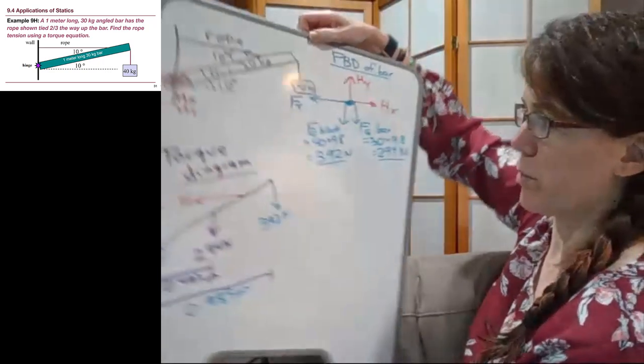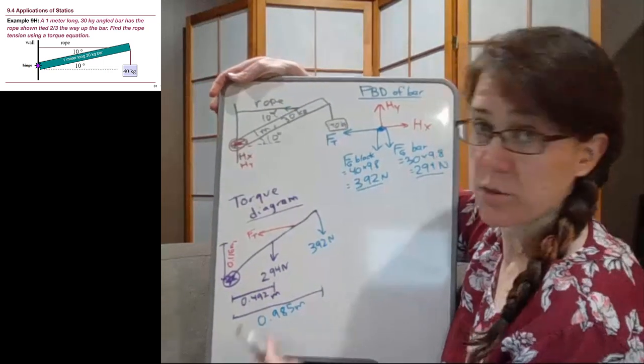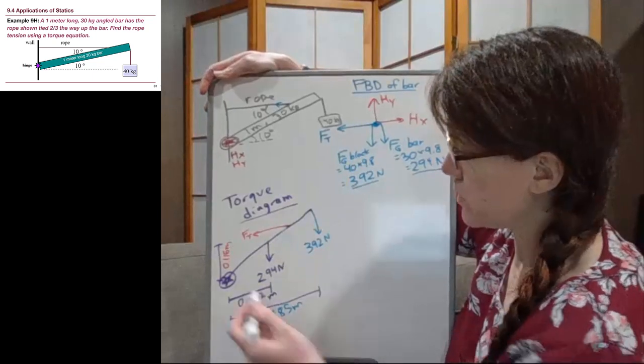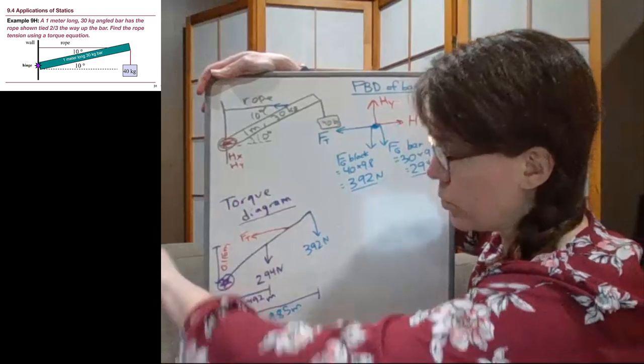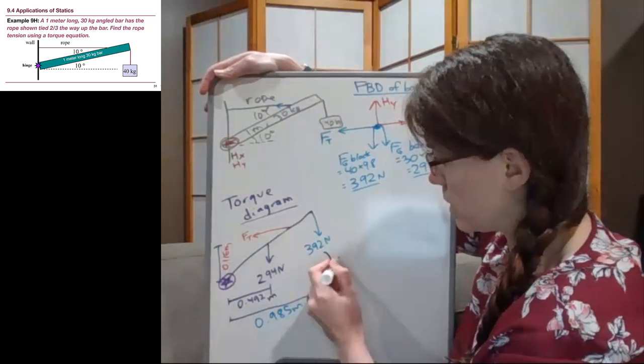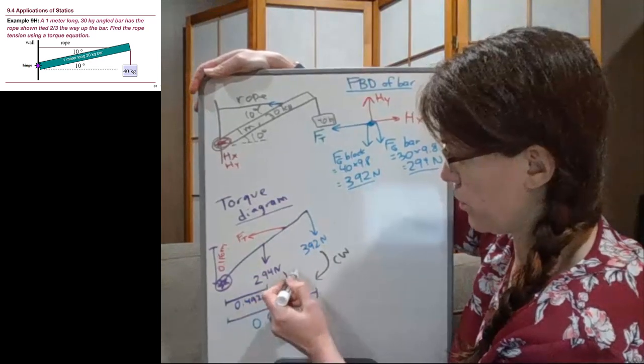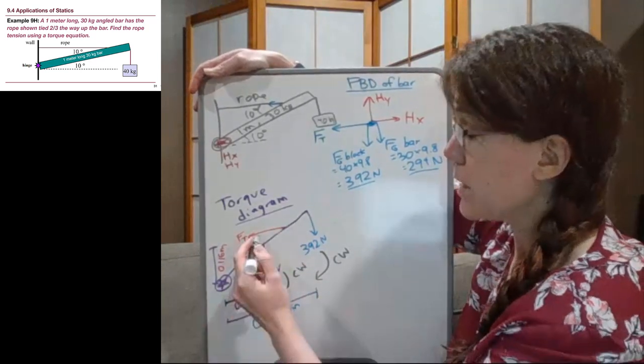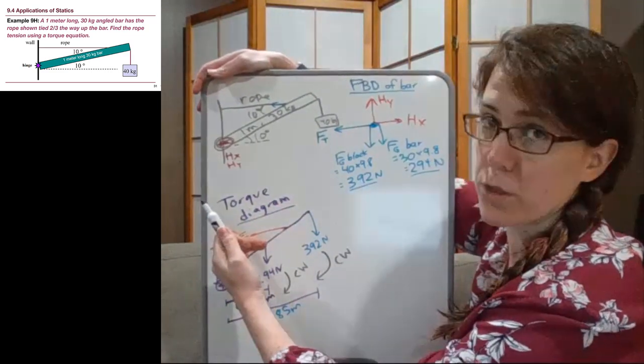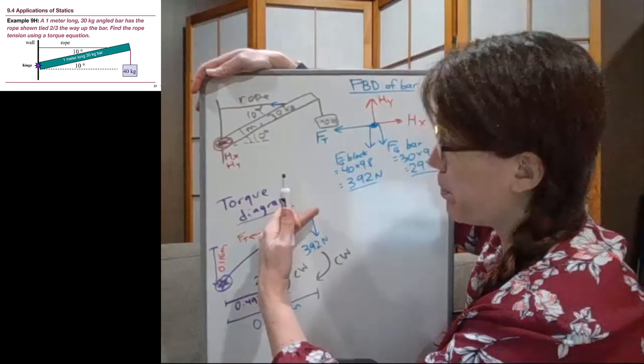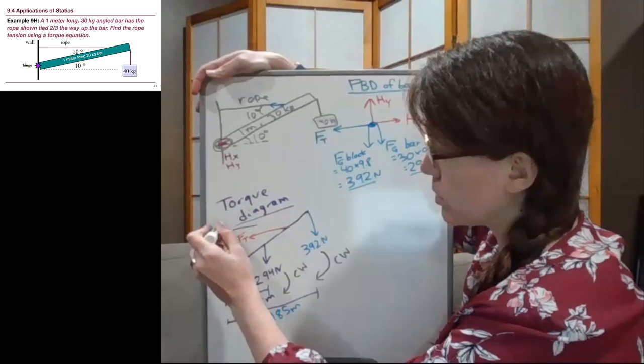So back to finishing the problem itself. Based on this axis, gravity is trying to have the bar swing downwards in the clockwise direction. That's true for the 392 Newtons. That is also true for the 294 Newtons. The tension, if somebody were able to pull with more force than what it currently has, that bar would swing upwards. And it would swing up and around in the counterclockwise direction.